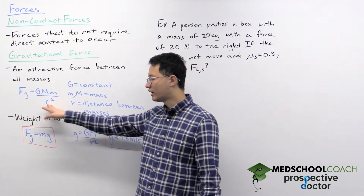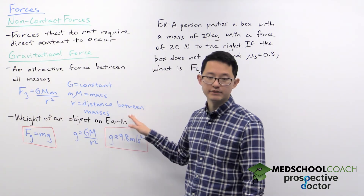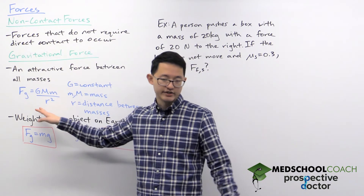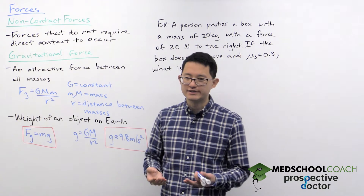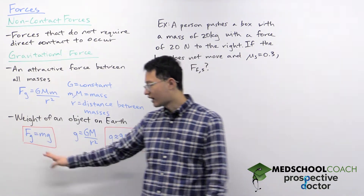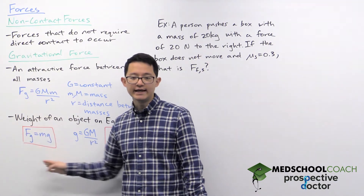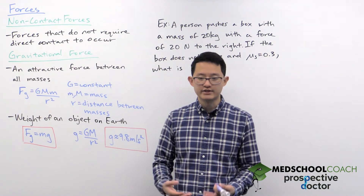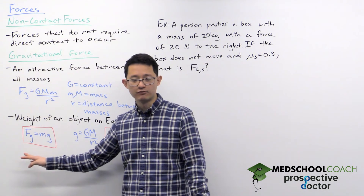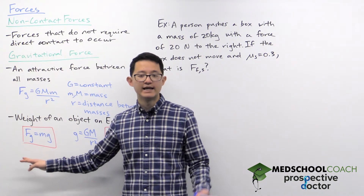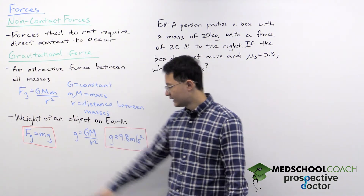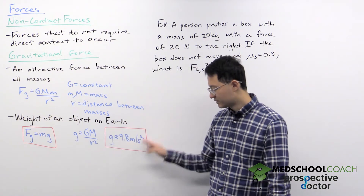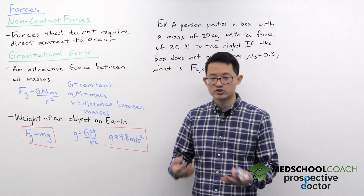The last component in this equation is R, which is simply the distance between the masses. You might have seen this equation before, but you probably also recall a much simpler one: F of G equals mg. This equation is used to describe the weight of an object, and you can see that weight is really just the gravitational force an object experiences. M is the mass of the object, and g is typically 9.8 meters per second squared.